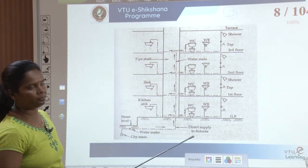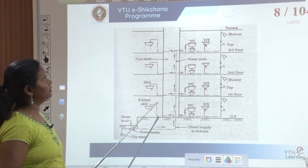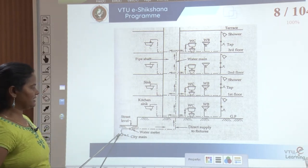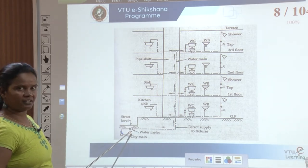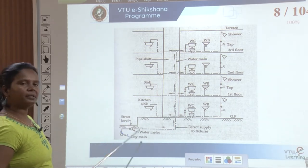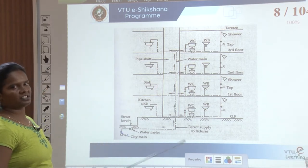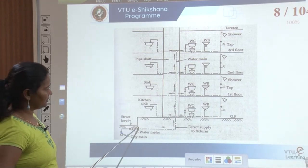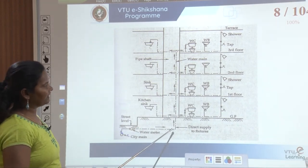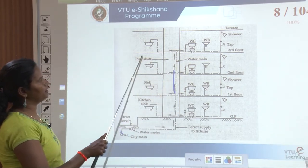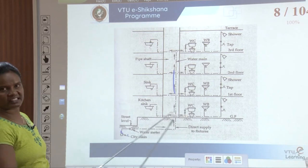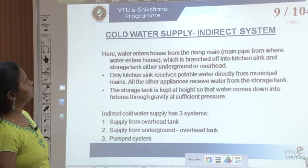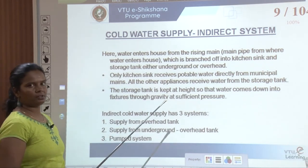This is the schematic diagram of the direct system. There is a city main pipe, then a water meter before the building entry, and from there water is supplied directly to each of the fixtures. That is the schematic diagram for direct systems.